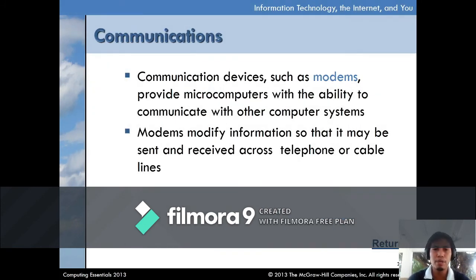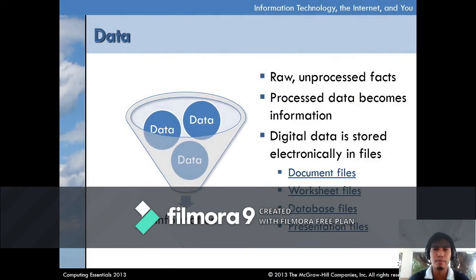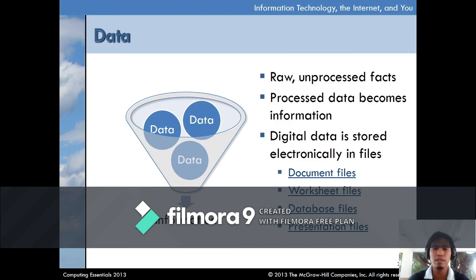Communication devices such as modems provide microcomputers with the ability to communicate with other computer systems. Modems modify information so that it may be sent and received across telephone or cable lines. Data is the last part of an information system — data are raw facts, and processed data becomes information. For example, 'Juan' is a data item and 'De la Cruz' is a data item; combined, 'Juan De la Cruz' becomes information pertaining to a specific person. Digital data is stored electronically in files.